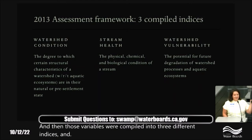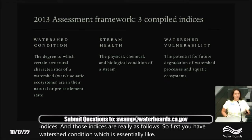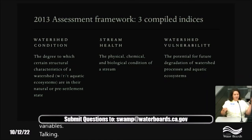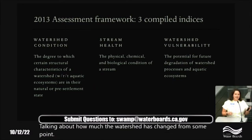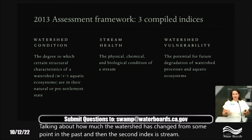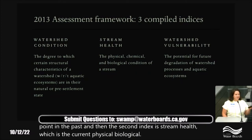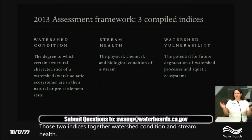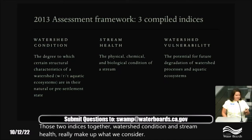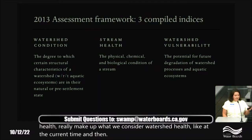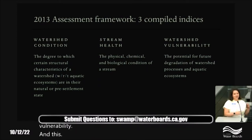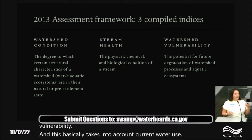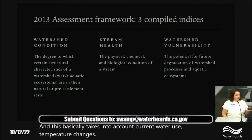The three indices are: first, watershed condition — large landscape-scale variables describing how much the watershed has changed from some point in the past. Second, stream health — the current physical, biological, and chemical condition of in-stream health. Those two together make up what we consider watershed health at the current time. The third index is watershed vulnerability, which takes into account current water use, temperature changes, and fire severity to figure out how much a watershed is at risk of degrading in the future.